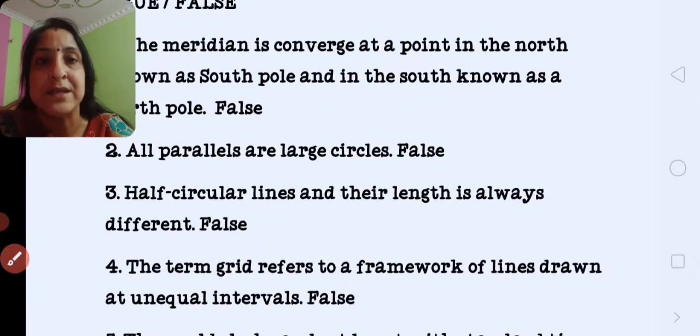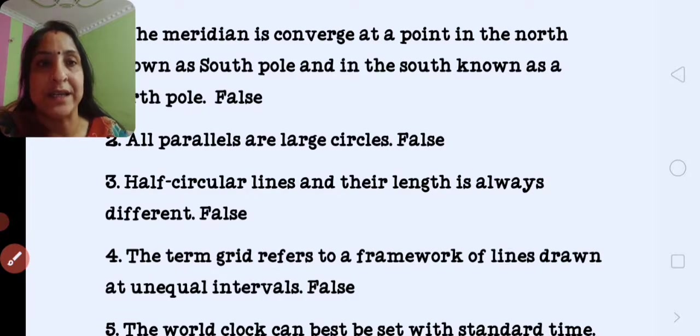Next is half circular lines and their length is always different. Answer is false, because their length is always same.